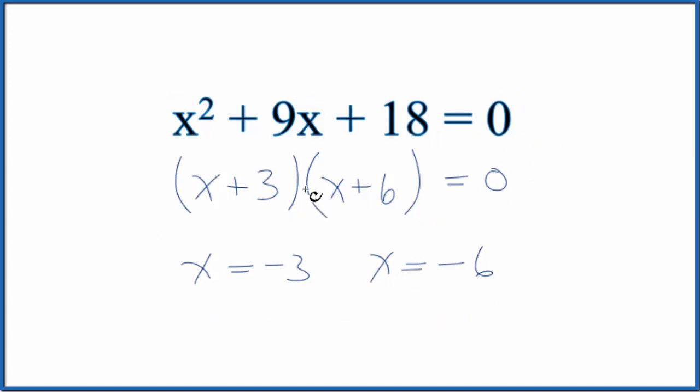So this is just one way to do it. This is Dr. V factoring the equation x² + 9x + 18 = 0. Thanks for watching.